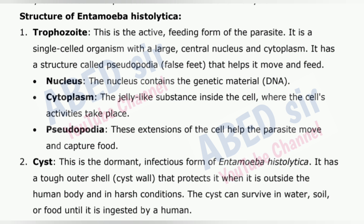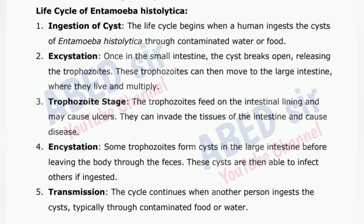Life cycle of Entamoeba histolytica: 1. Ingestion of cyst — The life cycle begins when a human ingests the cysts through contaminated water or food. 2. Excystation — Once in the small intestine, the cyst breaks open, releasing the trophozoites. These trophozoites can then move to the large intestine, where they live and multiply. 3. Trophozoite stage — The trophozoites feed on the intestinal lining and may cause ulcers. They can invade the tissues of the intestine and cause disease. 4. Encystation — Some trophozoites form cysts in the large intestine before leaving the body through the feces. These cysts are then able to infect others if ingested.